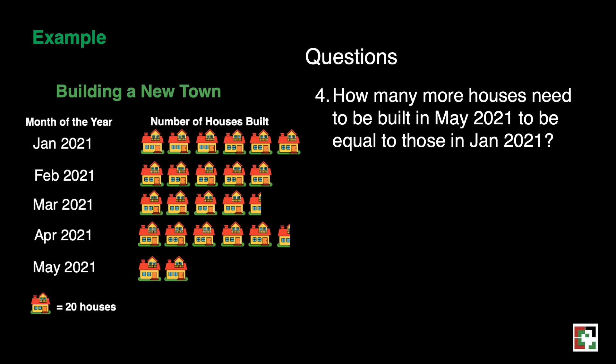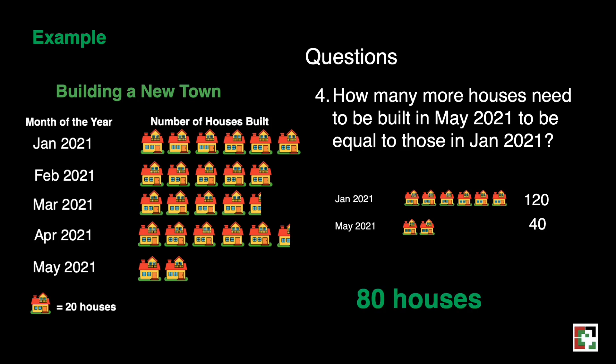For the last question, how many more houses need to be built in May 2021 to equal those in January 2021? We subtract the number of houses in May from January. January has 120 houses and May has 40 houses. 120 minus 40 equals 80 houses. Our final answer is 80 houses.